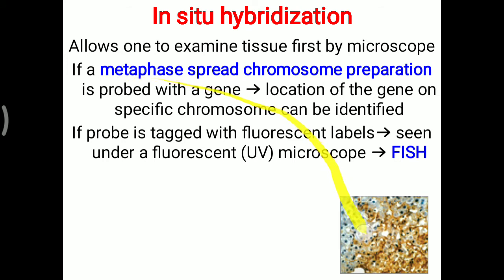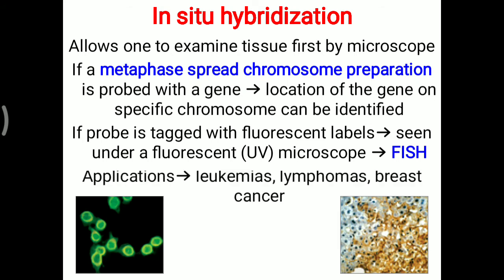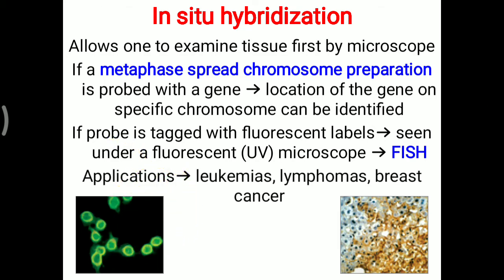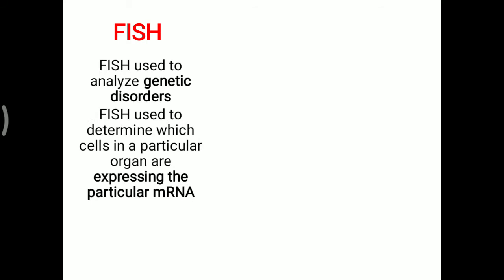This technique is very useful for the detection of particular diseases like leukemia, lymphoma, as well as breast cancer. When looking under the fluorescent microscope, a particular pattern will be seen. This technique is used to analyze genetic disorders as well as to determine which cells in a particular organ are expressing a particular mRNA.